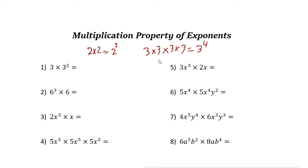In algebra, a variable is a letter that we use for a number. So for exponents, you can see we can also use the letters x, y, a, b, and so on.